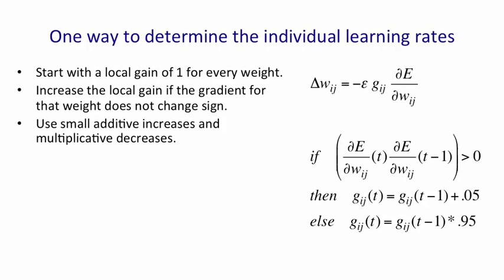If the gradients have opposite signs, we're going to decrease g_ij, and because we want to damp down g_ij quickly if it's already big, we're going to decrease it multiplicatively. That ensures that big gains will decay very rapidly if oscillations start.